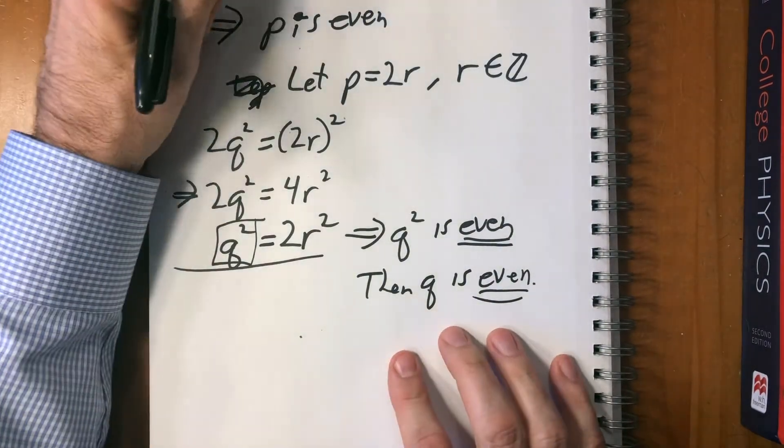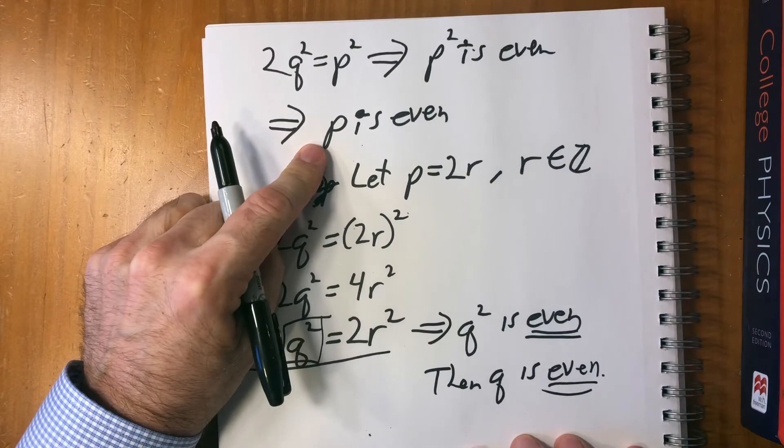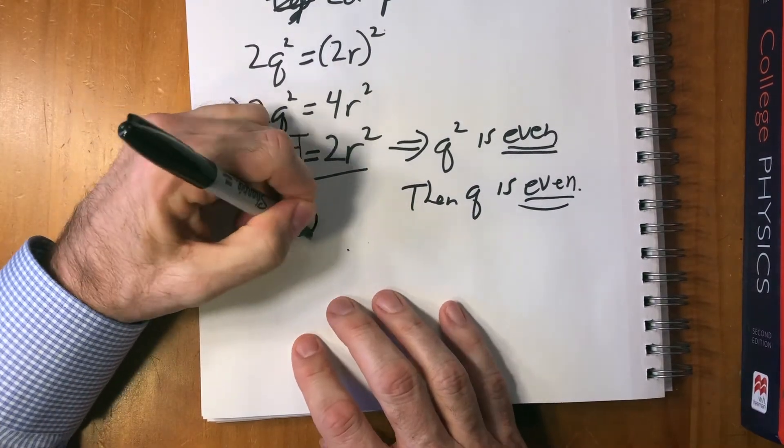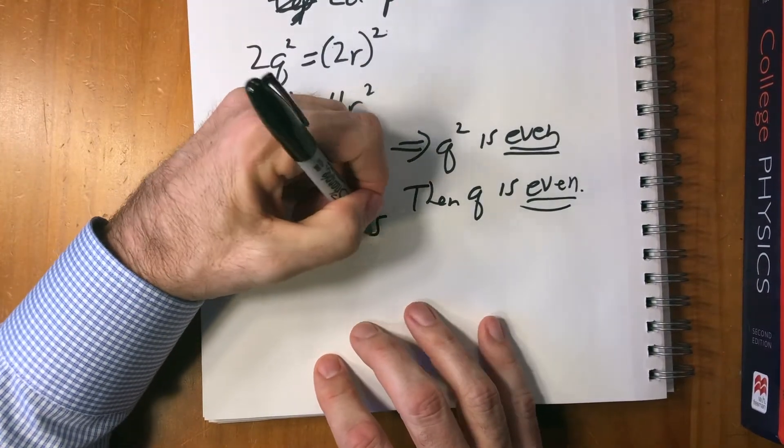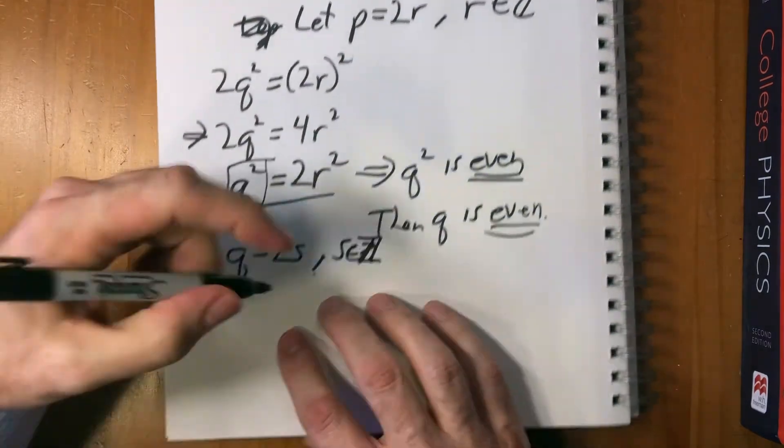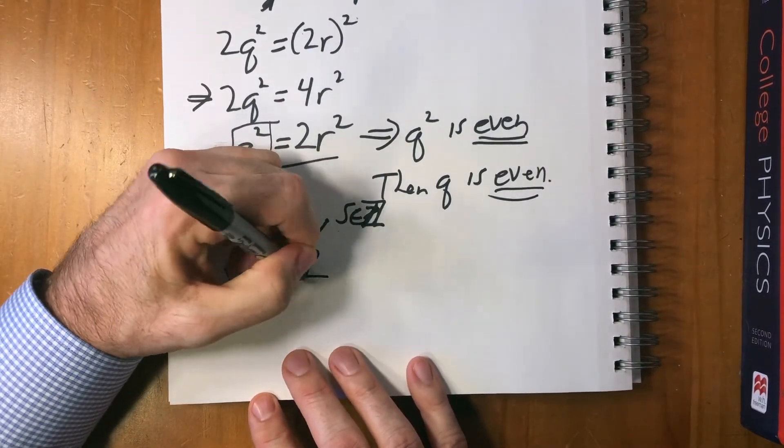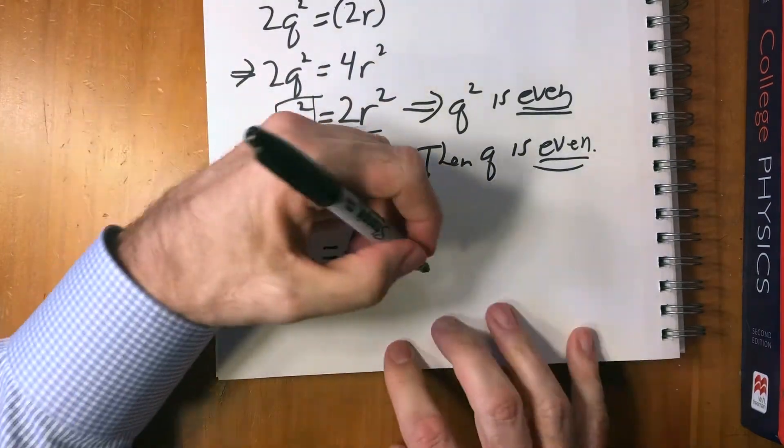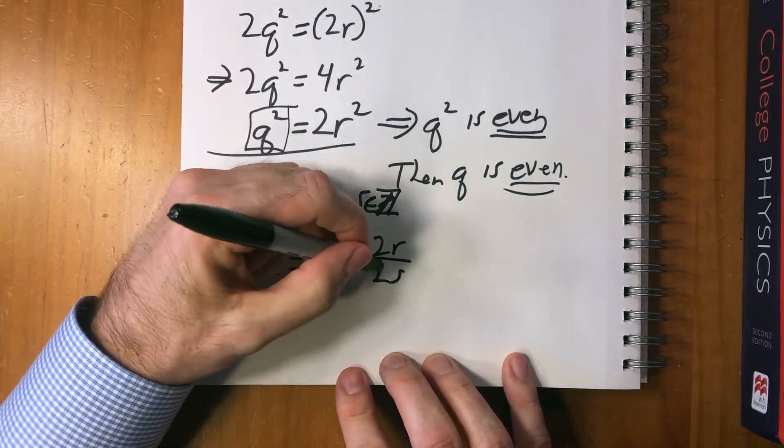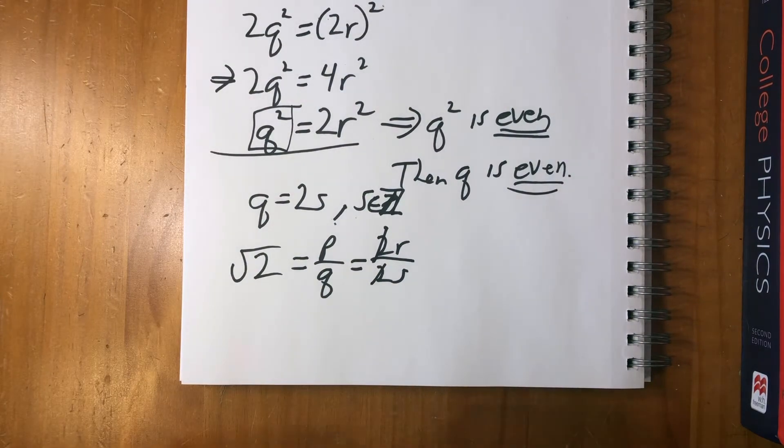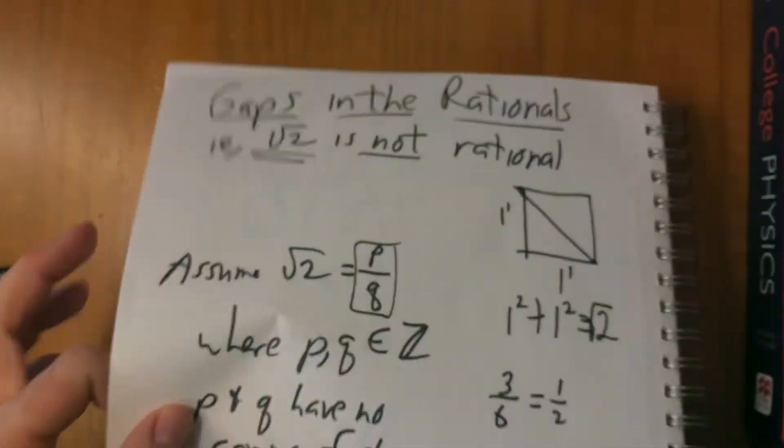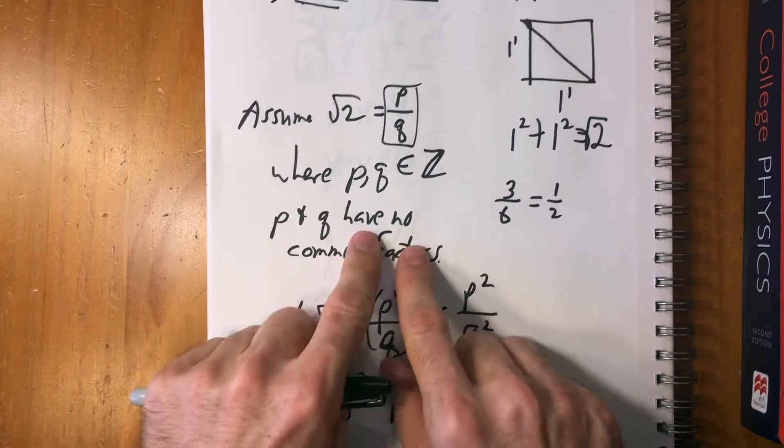So we just found out that p is even, and we just found out that q is even. That means we could rewrite q as 2s for some integer s. So in the original equation, we had the square root of two is p over q. We rewrote p and q as 2r over 2s. That means they have a factor in common. But we started by assuming we started by assuming that p and q have no common factors.